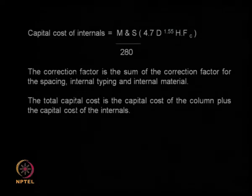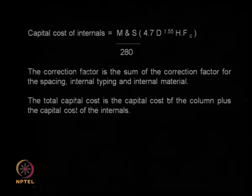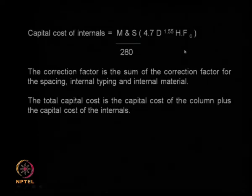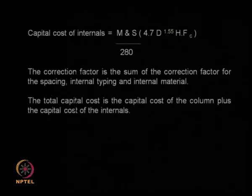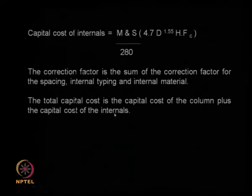A column extractor also has internals — packing, trays, and different internal materials — which must be costed separately using a similar formula involving M&S divided by 280, the diameter and height of the column, and a correction factor. The correction factor depends on tray spacing, type of internal, and material of construction — stainless steel, mild steel, or carbon steel. The total capital cost equals the capital cost of the column plus the capital cost of the internals, plus all installation costs. This gives you an idea of how to do costing for a column-type extractor.